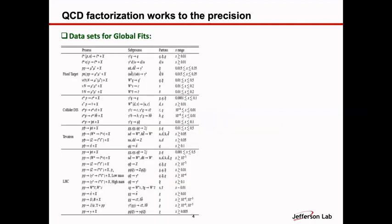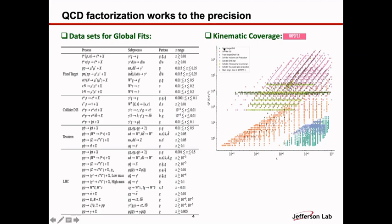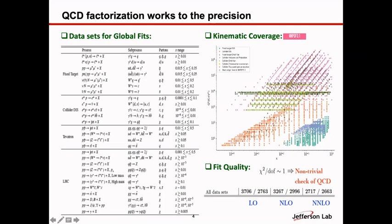We learned a lot. With a tremendous dataset — using fixed-target data as well as LHC data — we have huge coverage of the kinematical region in terms of momentum fraction X and momentum transfer scale. The quality of the global fit is so good. The chi-square per degree of freedom is close to one, which is very non-trivial given that you have many different physical processes. The factorization approximation and power corrections are completely different for different processes. Going from leading order to next-to-leading order to next-to-next-to-leading order, you can see the chi-square per degree of freedom improving, with NNPDF 3.1 as an example.